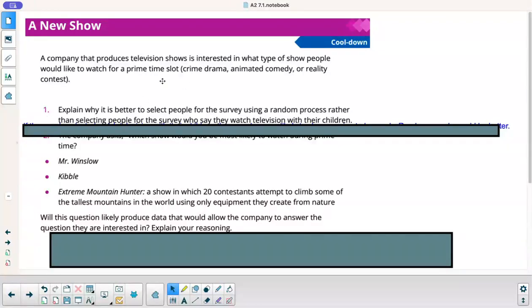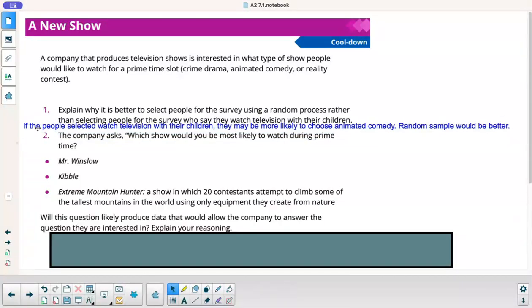So, number one, explain why it is better to select people for the survey using a random process rather than selecting people for the survey who say they watch television with their children. Well, obviously, if the people selected watch television with their children, they may be more likely to choose animated comedy. Random sample would definitely be better.